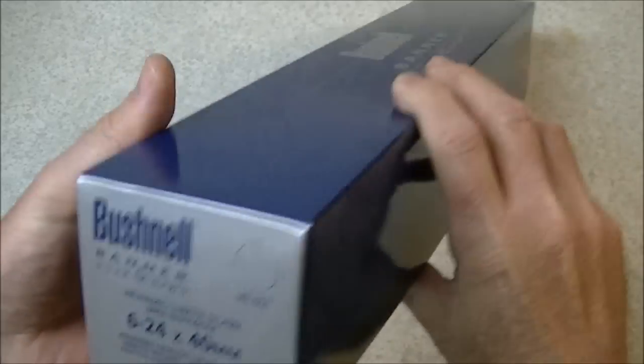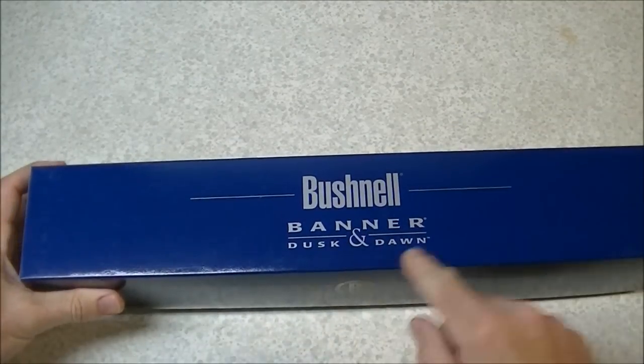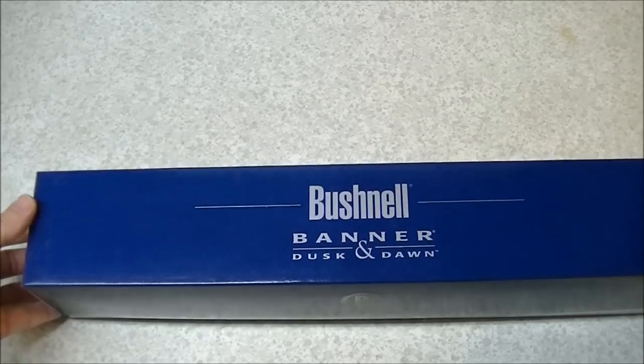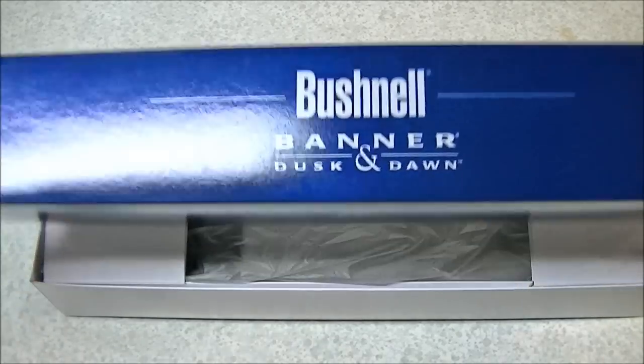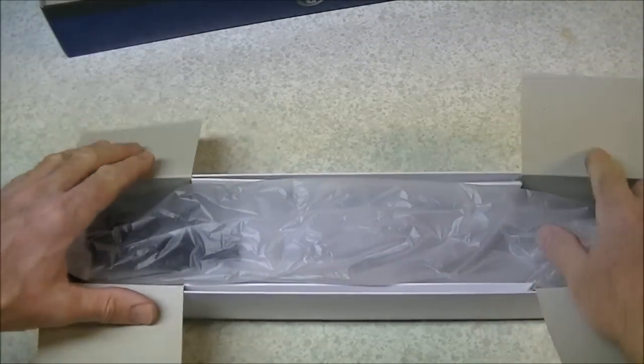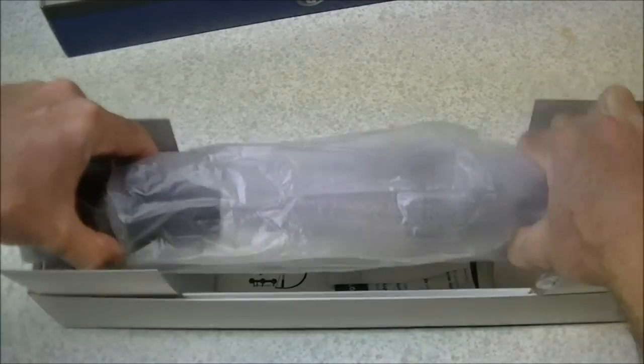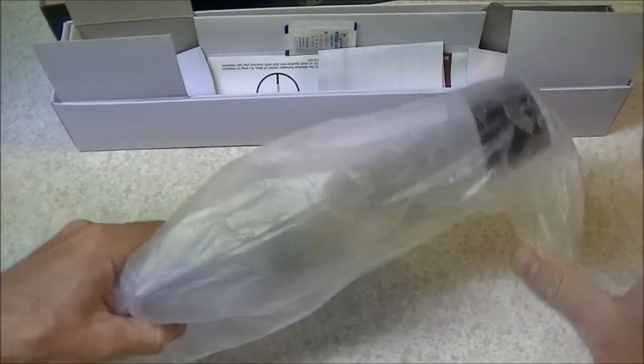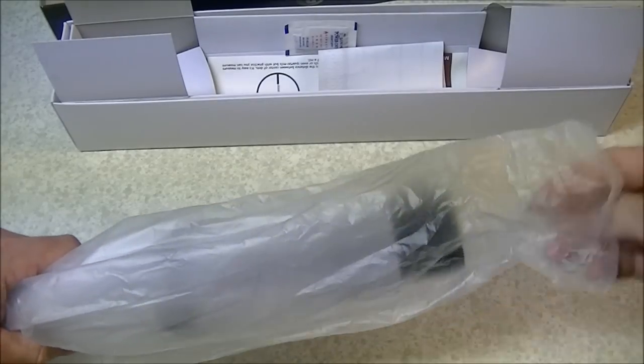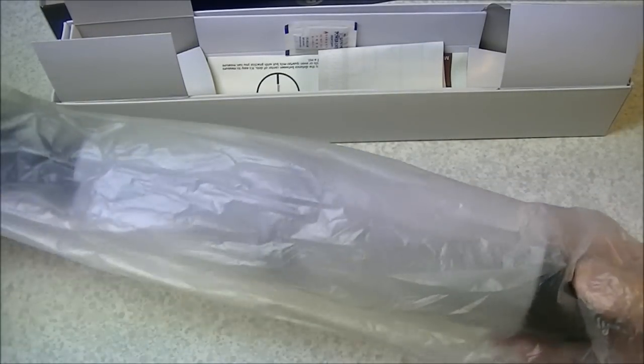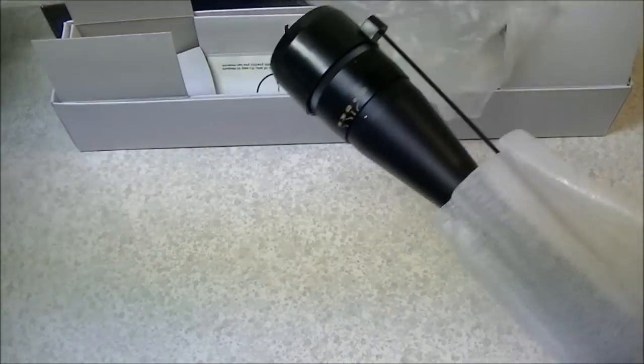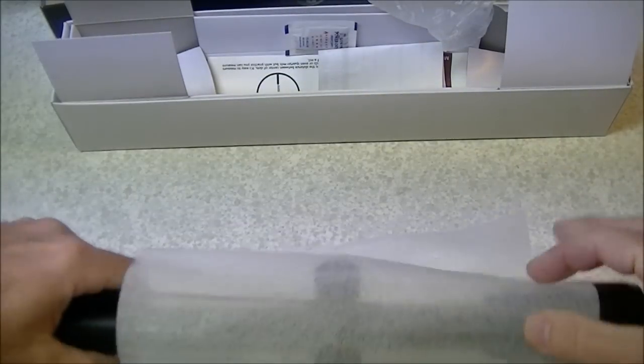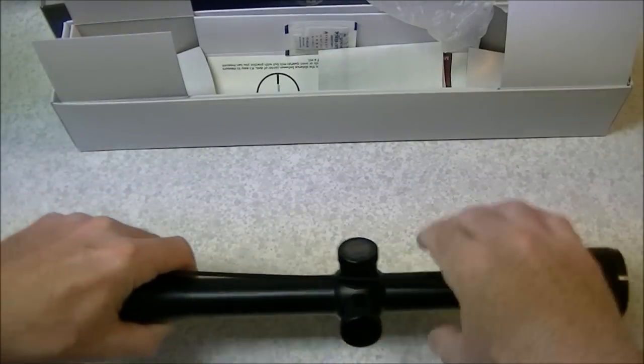So this is a Bushnell Banner so-called Dusk and Dawn scope and it's in the usual slip top two-piece box. Of course I've had this out of the box before at the gun shop, but it wouldn't be a proper unboxing video if you didn't take something out of a box. So of course it comes packed up in some plastic and it's got some styrofoam on it to protect it.